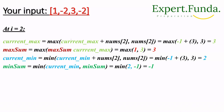Now at i=2, the element is 3. current_max is currently -1. We add 3: max(-1 + 3, 3) = max(2, 3) = 3. So current_max becomes 3. Now max_sum: max(previous max_sum = 1, current_max = 3) = 3. So max_sum updates to 3.